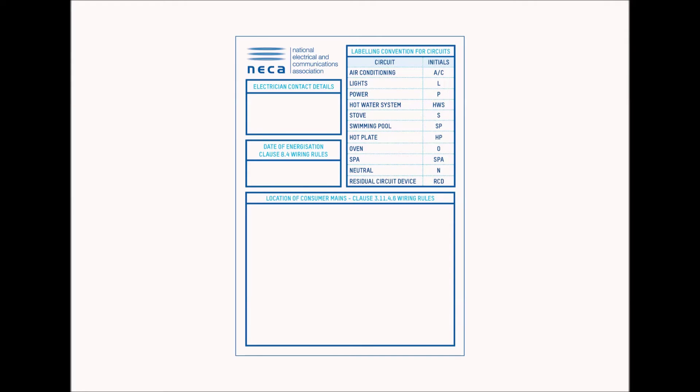Western Power have informed us that the main issues are incorrect labeling and no fire sealing of switchboards, and we have some simple solutions to help you stay compliant. NECA WA offers this sticker to members for free — it meets the wiring rules requirements by clearly displaying the circuit legend.